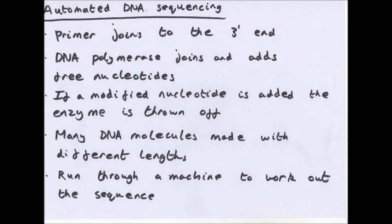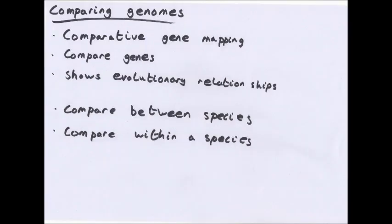Essentially, you have these radioactive or fluorescent markers which bind to any point on the sequence, which stops DNA polymerase at that point. This means you'll get different length DNA samples, and you can see what the order of colors are.